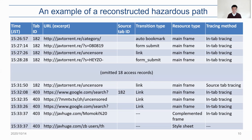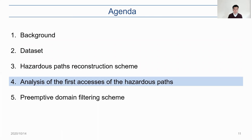This figure shows an example of a reconstructed hazardous path. The last line shows the identified malicious URL. From that point, we traced back the accesses by running the in-tab tracing and source tab tracing methods. After running several iterations, we identified a bookmark access record and regarded it as the entry point, stopping the traceback process. We extracted hazardous paths for all malicious access records and now use them to analyze user behavior.